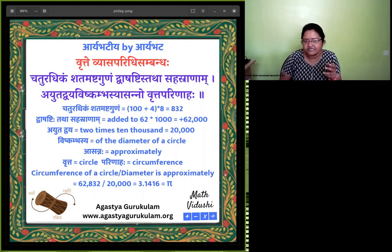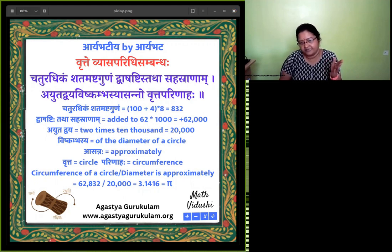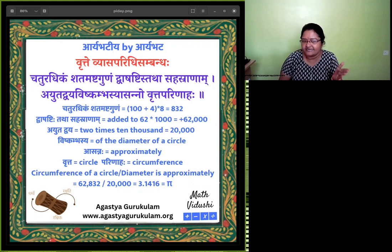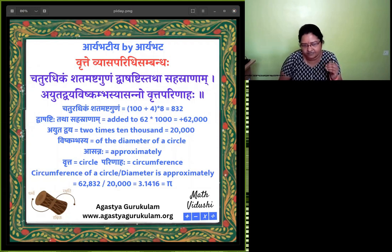Chaturadikam Shatam means: Shatam is 100, and Chaturadikam means plus 4, so 104. Ashtagunam means multiplied by 8, giving 832. Then Tatha — added to Dvashashti Sahasranam, which is 62,000. So you get 62,832.